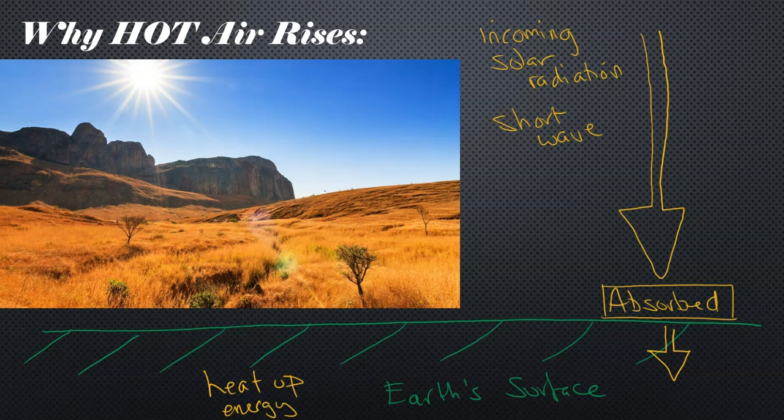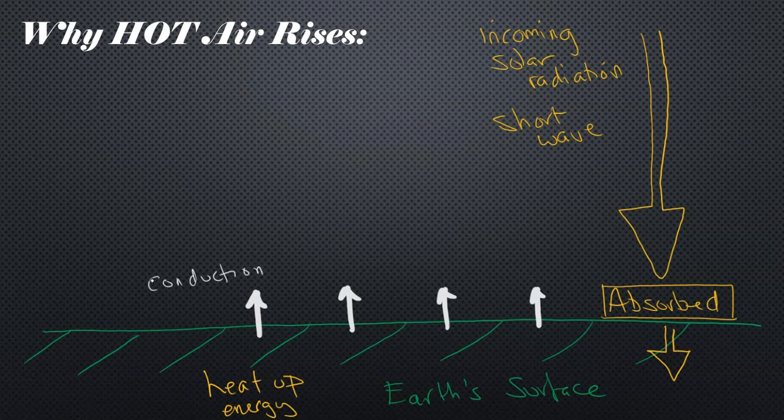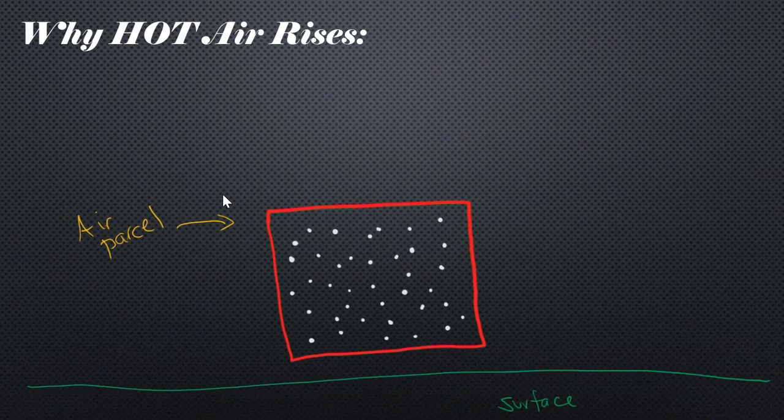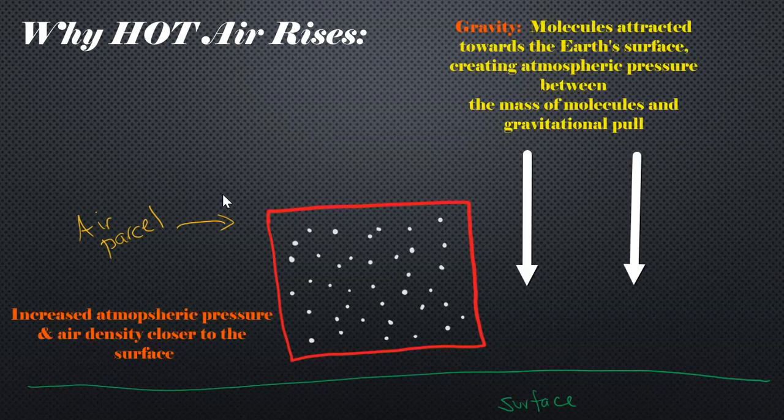So what happens is the Earth's surface is going to transfer through conduction, thermal energy. Conduction is touch, and the air that is right above the surface is going to be added heat, added some thermal energy from our surface. Let's imagine that we have this air parcel filled with air molecules, and it's close to the surface, so the increased air pressure and air density due to gravity, and the fact that there's more air molecules close to the surface than there is higher in the atmosphere, and we have this air parcel.